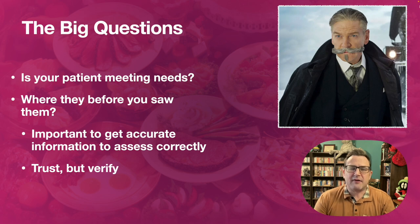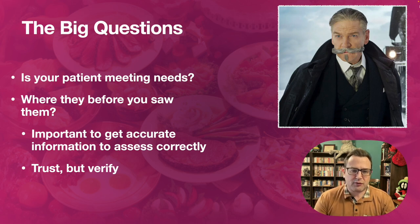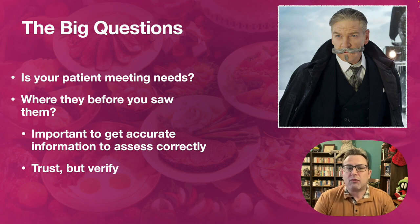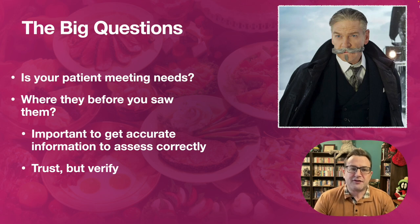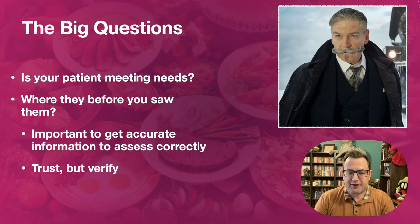This may be the most important part of this. The best way to determine if your patient is malnourished or at risk of malnourishment is to ask: what are they eating now? What have they been eating? That's the best way to determine malnutrition. You have questions to answer — is your patient meeting needs? Were they before you saw them? It's important to get this information accurate. And unfortunately, you need to trust but verify what they say.